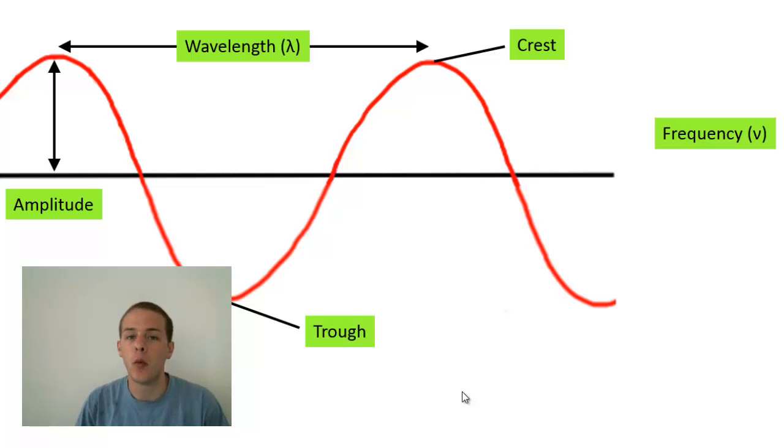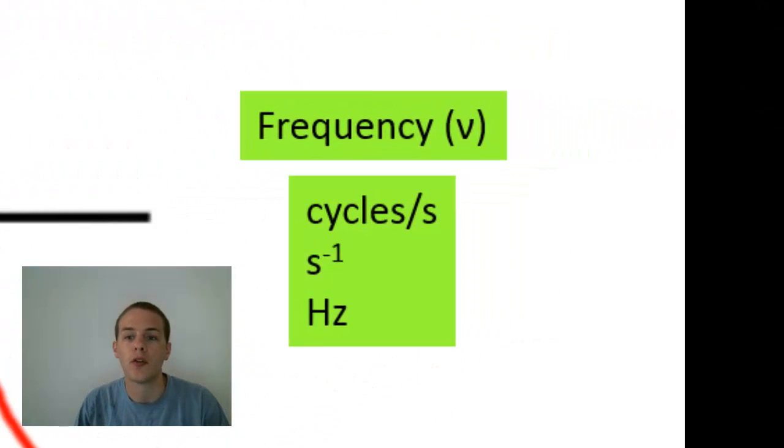And the frequency of a wave is the amount of wave cycles or the amount of crests that pass by a fixed point in a given amount of time. And usually the unit for frequency is what we call cycles per second. Now cycles is dimensionless. Cycles does not have a unit of measurement associated with it. So oftentimes you'll see cycles per second denoted as seconds to the minus one or inverse seconds. Also, you might see this reported as Hz, which stands for hertz, where one hertz is one cycle per second.